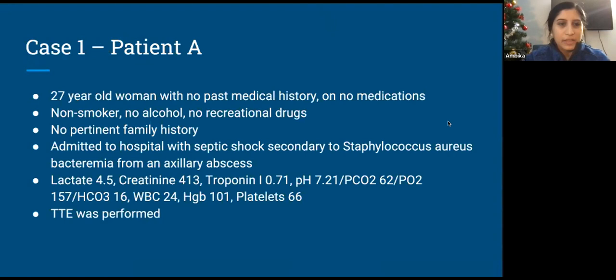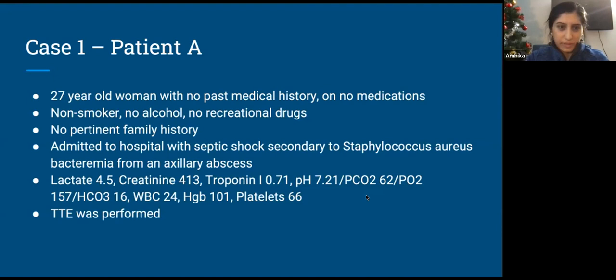Case one — patient A. Patient A is a 27-year-old woman with no past medical history, on no medications, non-smoker, doesn't consume any alcohol, no recreational drugs, no pertinent family history. She was admitted to hospital with septic shock secondary to a staph aureus bacteremia infection from an axillary abscess. Her lactate was 4.5, creatinine in the 400s from a baseline of normal, troponin I was 0.7, pH of 7.2 with a bicarb of 16, white count elevated at 24, and platelets 66 — overall a very sick patient. She had an echocardiogram performed.